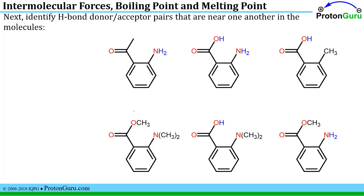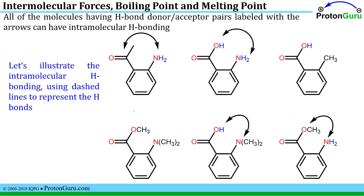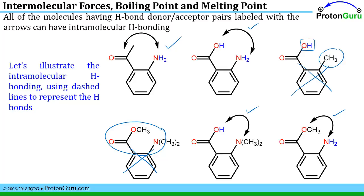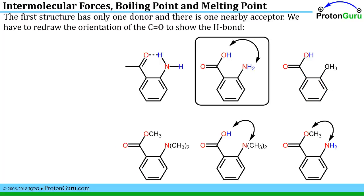You'll need to have both a donor and an acceptor close enough to interact. Looking at those molecules, we see that four of them have both a donor and an acceptor in two separate entities close enough to interact. One molecule has no donors, so it is not capable of intramolecular hydrogen bonding. Another has no acceptor beside the donor, so it's also not capable of intramolecular hydrogen bonding. The first molecule has only one donor and one nearby acceptor, making it relatively easy to identify the intramolecular hydrogen bond that can form.